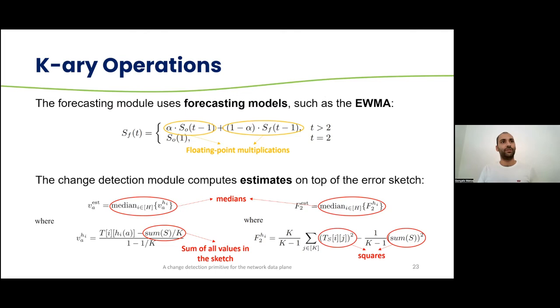We will look into detail into the operations performed with the K-Area, and the first ones are with the forecasting module, which uses forecasting models such as the exponentially weighted moving average, and you can already see that it performs floating point multiplications in it, and you can already see that it is a bit challenging to perform this inside the data plane using the language P4. The change detection module also computes estimates on top of the error sketch, which uses medians, sums of all values in the sketch, and it uses squares, and this is again very challenging to perform using P4 in the data plane.